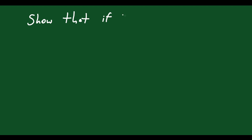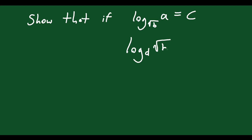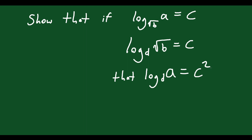Let's do another question. This one says: show that if log base √b of a equals c, and log base d of √b equals c, then log base d of a equals c squared. This is a doozy — you might not know where to start. They're giving two conditions both equal to c, and we need to prove the third statement.